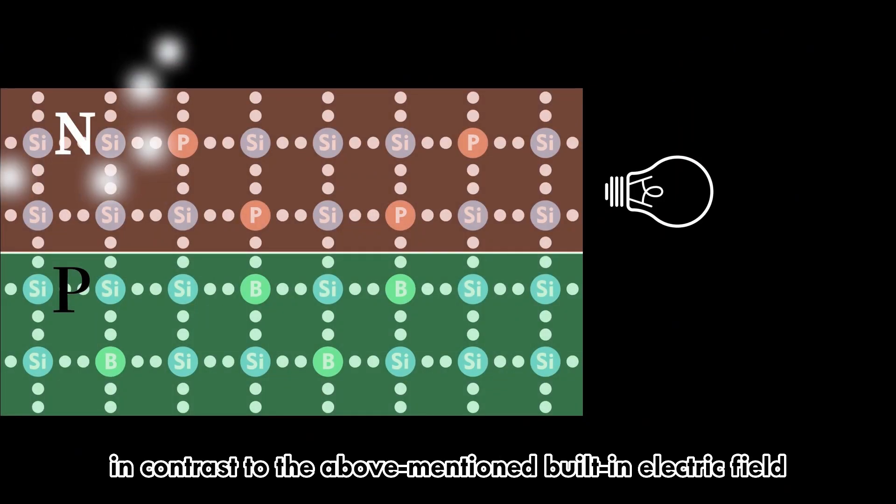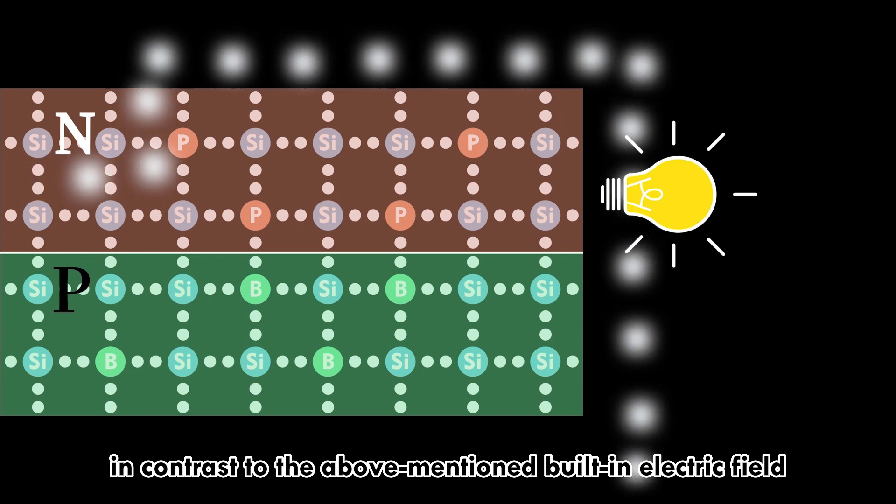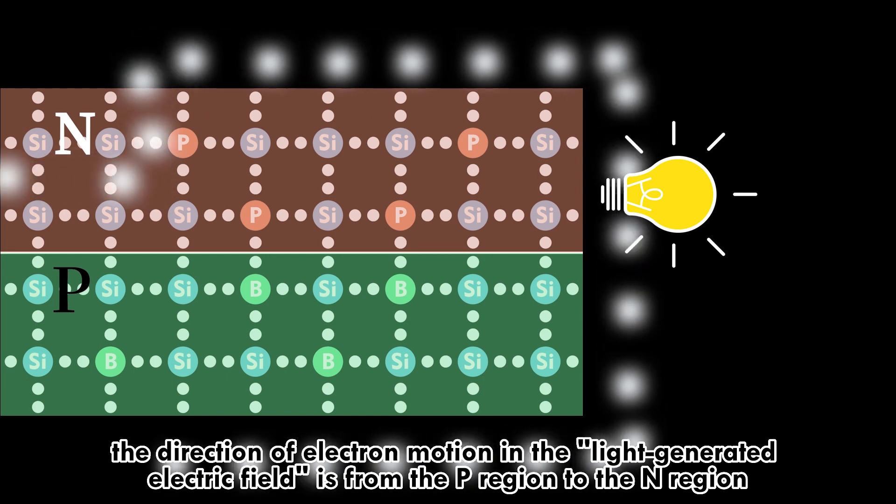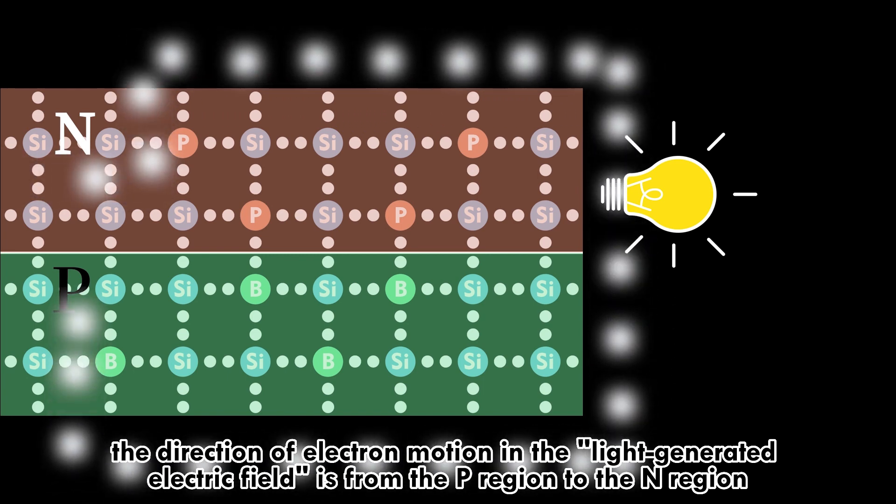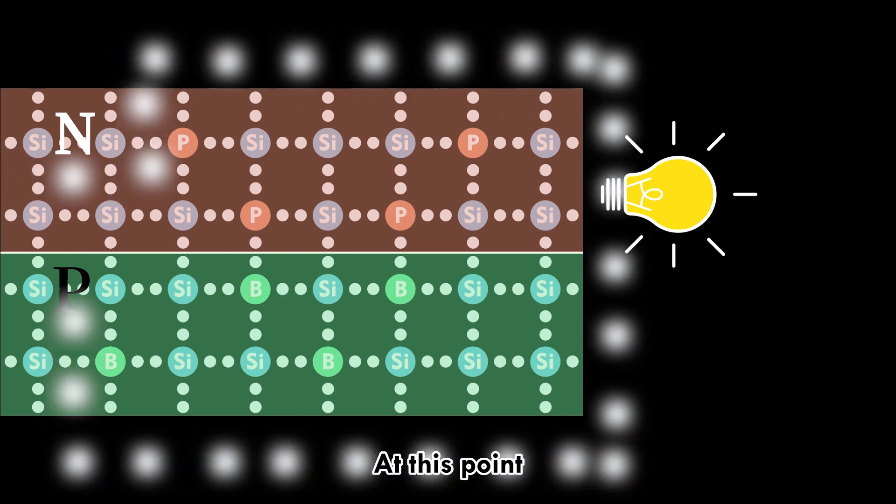Note that, in contrast to the built-in electric field, the direction of electron motion in the light-generated electric field is from the p region to the n region. At this point,